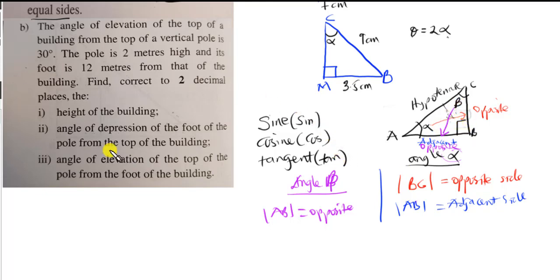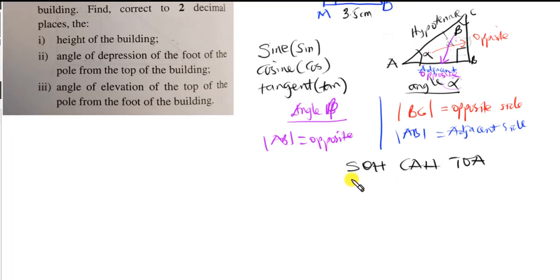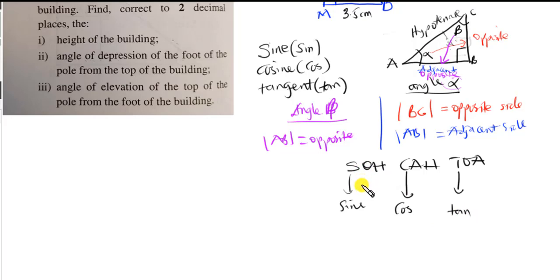We remember the trig ratios using the mnemonic SOHCAHTOA. S stands for sine, C for cosine, T for tangent. Sine of an angle equals opposite over hypotenuse. Cosine of an angle equals adjacent over hypotenuse. Tangent of an angle equals opposite over adjacent. These ratios link the angle to the sides of the triangle.